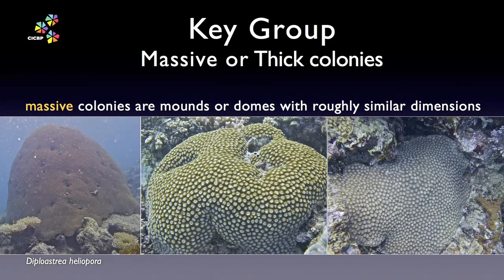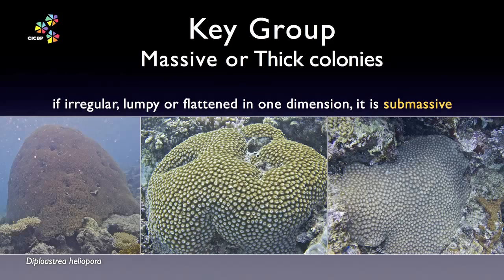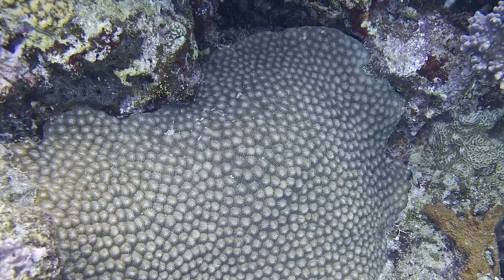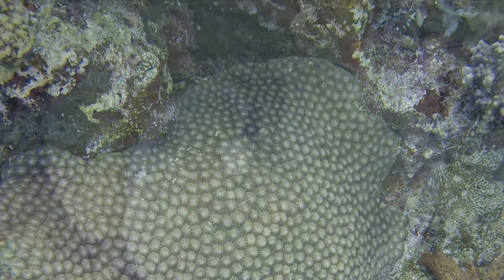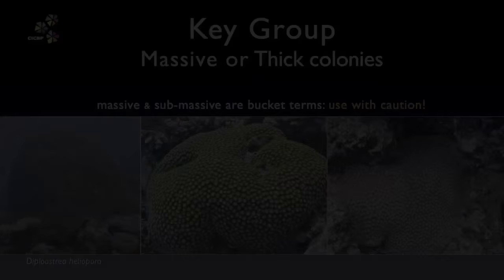Back to the massive and thick colony key group. Let's start by defining just what we mean by a massive coral. The term massive coral colony infers that the colony is a mound or dome with roughly similar dimensions in any direction, like the colony on the left-hand side. If a coral grows flat in one dimension, then we might refer to that colony as sub-massive. When the colony becomes very flat, though still solid, we might say it was thick encrusting. You will need to make this call regularly when you dive. Have an opinion and test yourself.